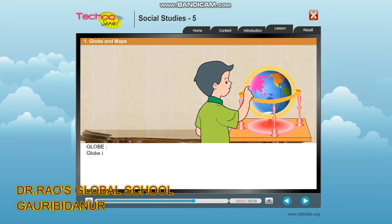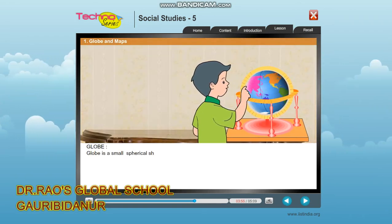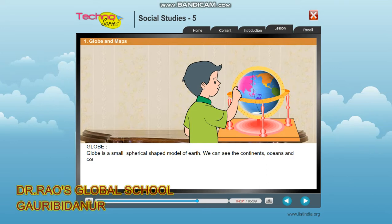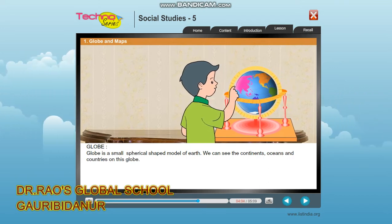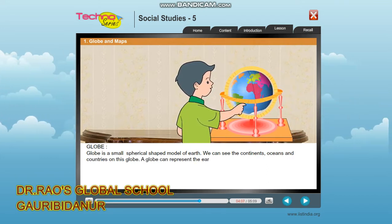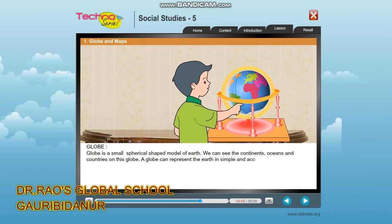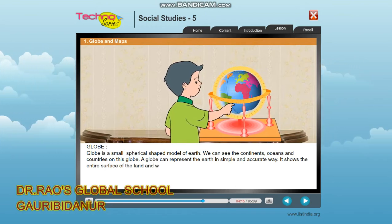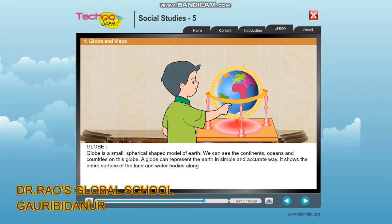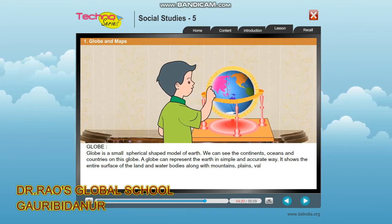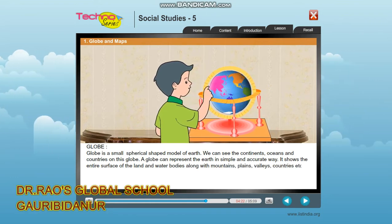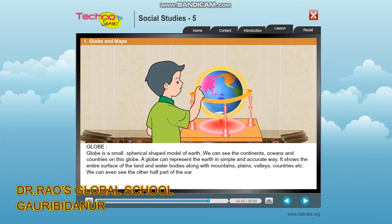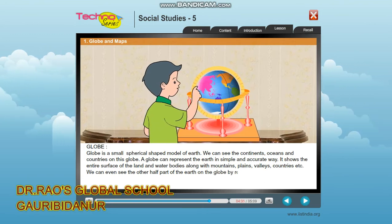A globe is a small spherical-shaped model of earth. We can see the continents, oceans, and countries on this globe. A globe can represent the earth in a simple and accurate way. It shows the entire surface of land and water bodies along with mountains, plains, valleys, countries, and more. We can even see the other half of the earth on the globe by rotating it.